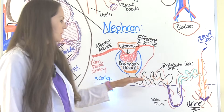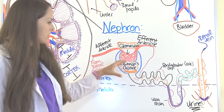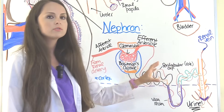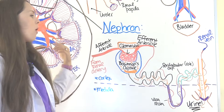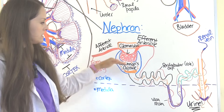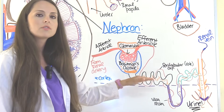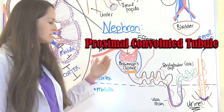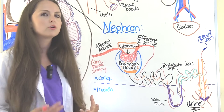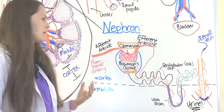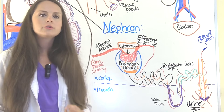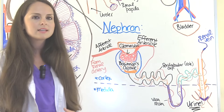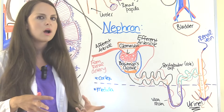Now back to the nephron. All that filtrate is in Bowman's capsule, ready to go down through these tubules to be reabsorbed or secreted. The first part it hits is called the proximal convoluted tubule. This area is where most of your reabsorption is going to occur — pretty much all of your glucose, your amino acids, a lot of sodium and chloride, and similar substances. These are things that are essential and that your body really needs right away.